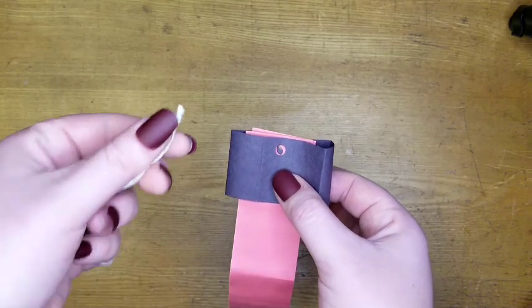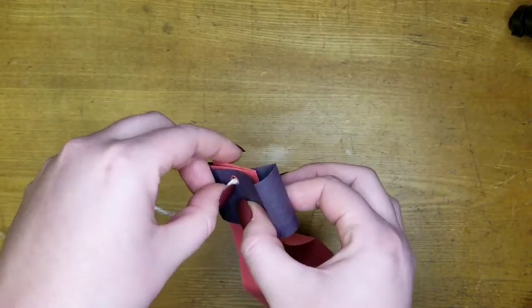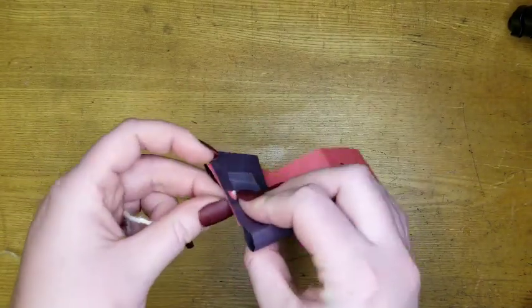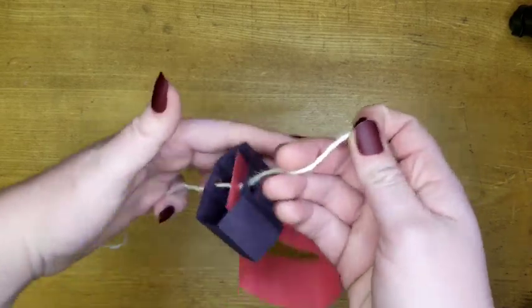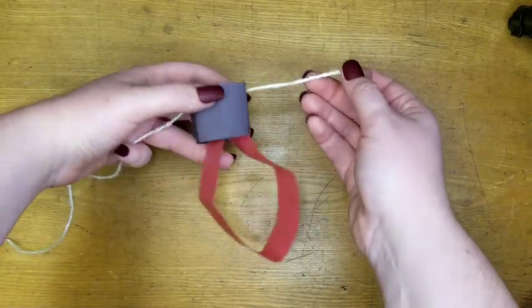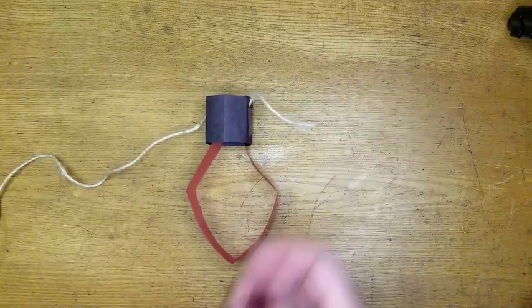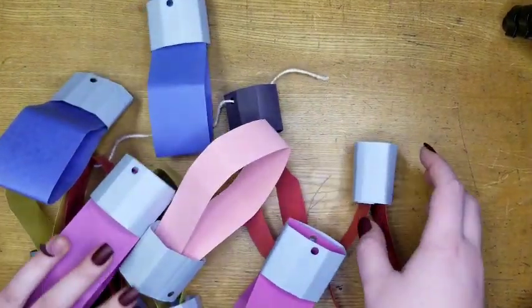Thread the piece of twine through all four holes and repeat those steps until you have ten light bulbs.